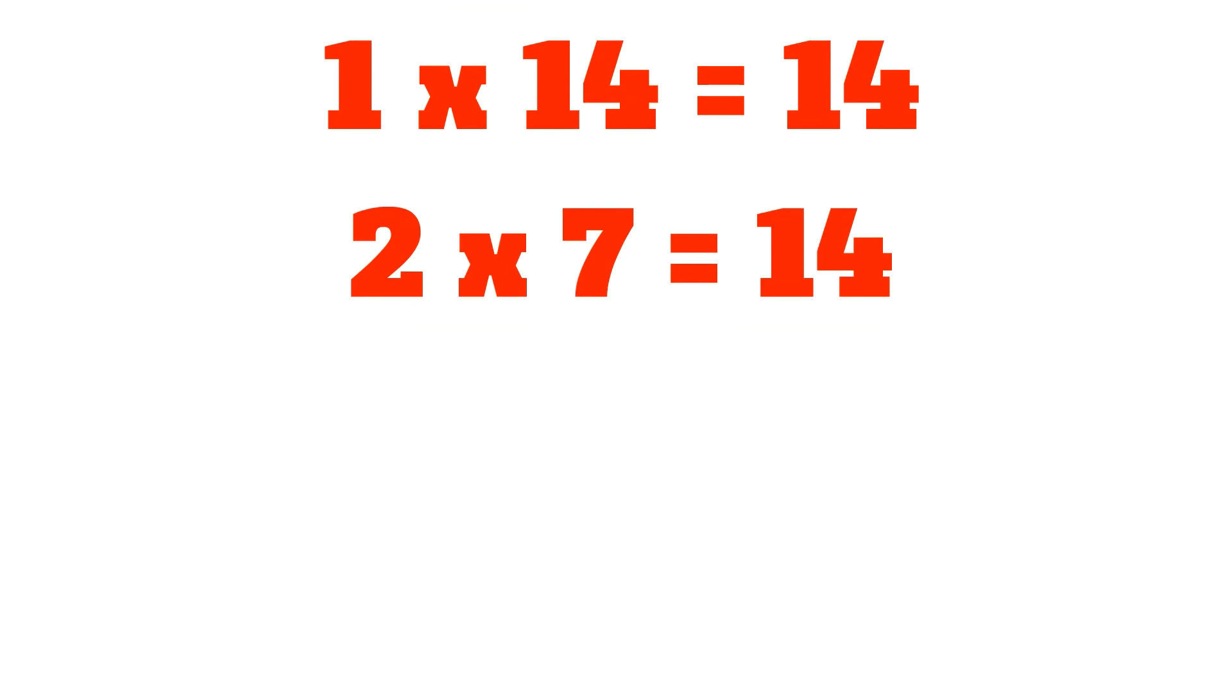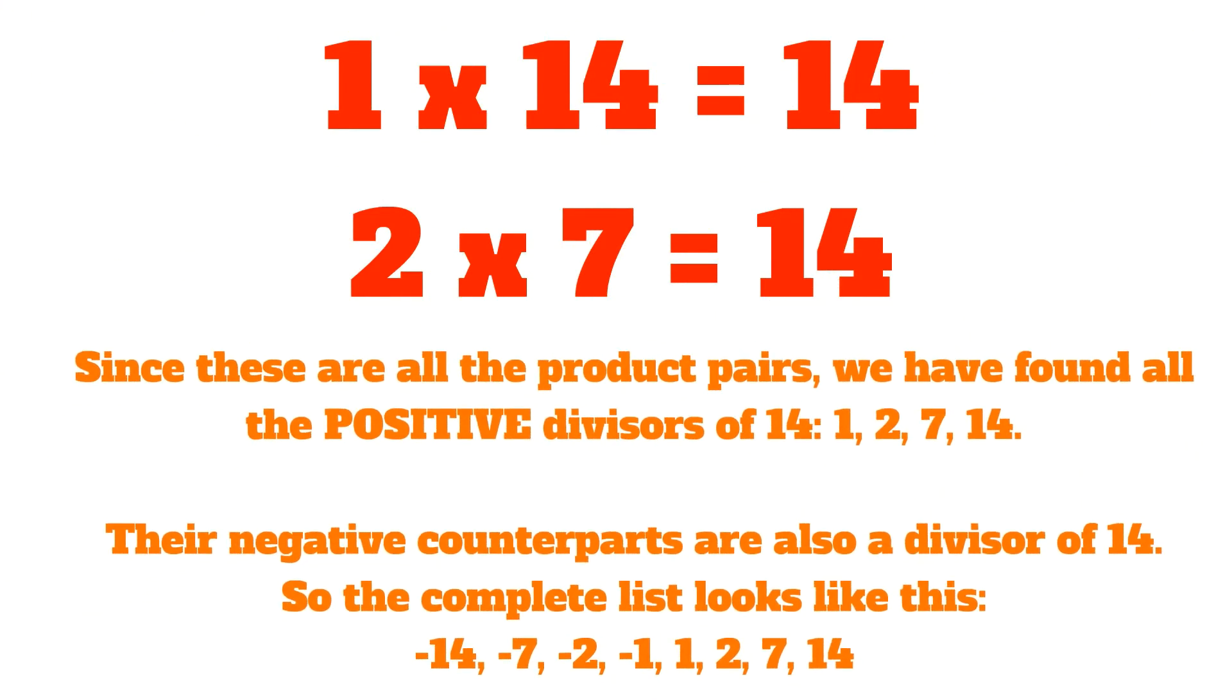We know that 1 times 14 is equal to 14, and that 2 times 7 is equal to 14. These are all the product pairs that are possible. So we have found all the positive divisors of 14.